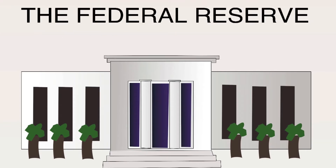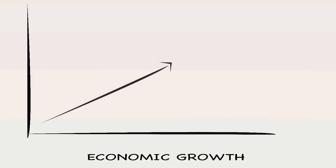The Federal Reserve is the central bank of the United States. The primary role of a central bank is to control the growth of an economy by increasing and decreasing the money supply. Ideally we would like the economy to grow at a nice, steady, stable rate.